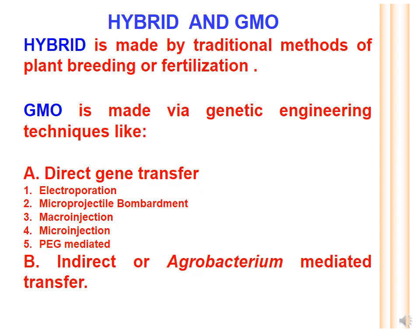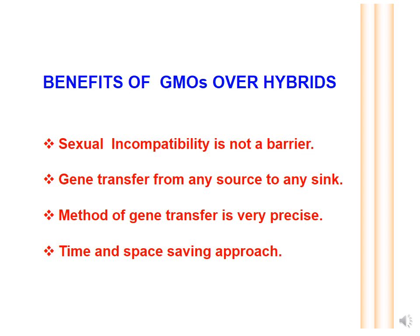GMOs are made by direct gene transfer methods like electroporation, micro-projectile bombardment, polyethylene glycol transfer, and micro-injection, or by indirect gene transfer using an intermediate organism — generally Agrobacterium tumefaciens or Agrobacterium rhizogenes. The basic difference is that hybrids are made by natural gene transfer while GMOs are made by artificial or forceful gene transfer using genetic engineering.